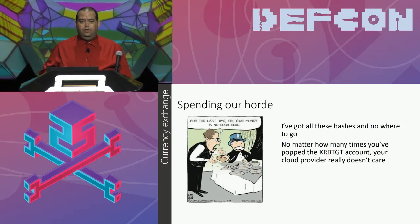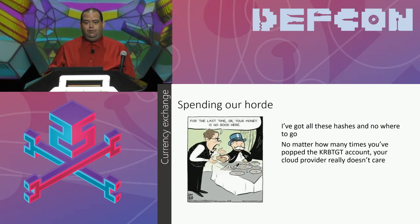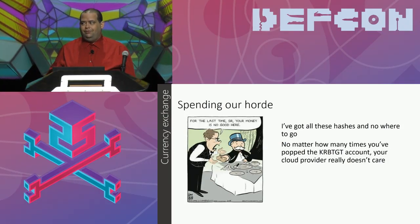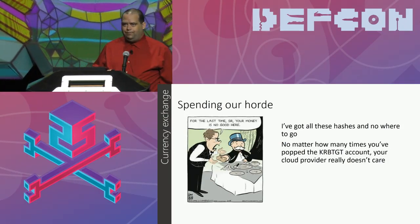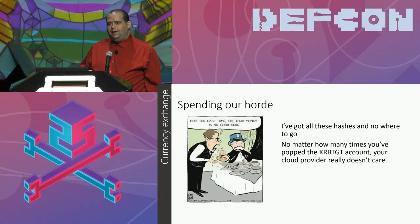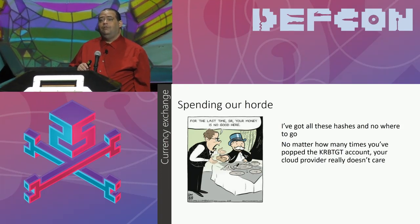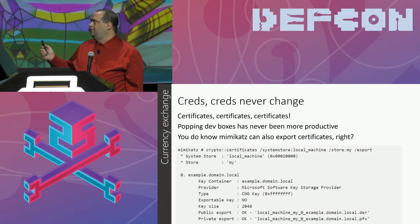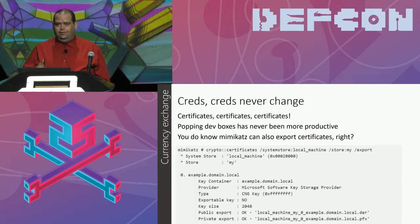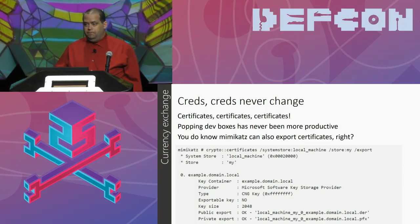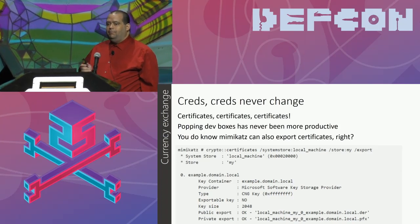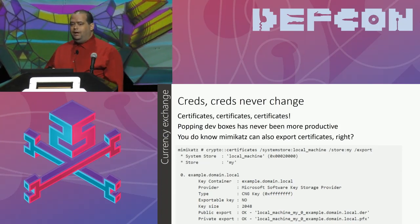So we've got all the hashes, we have the Kerberos TGT, but your cloud provider really doesn't care. As Sean was just talking about, they speak a different language — they speak federation. You might be able to get in if the federation server that provides that permission is on your domain, but you might not. Credentials never change — they're always good — but the type of credential changes. In the cloud world, we're mostly interested in certificates, private keys, and API tokens.